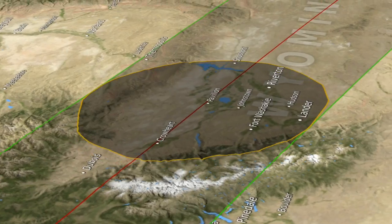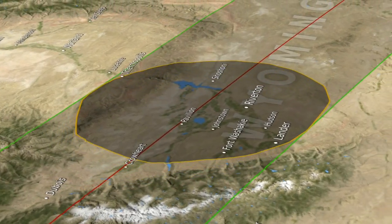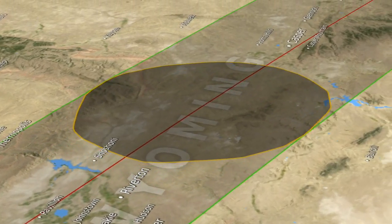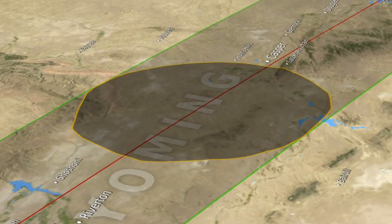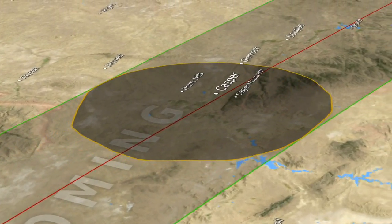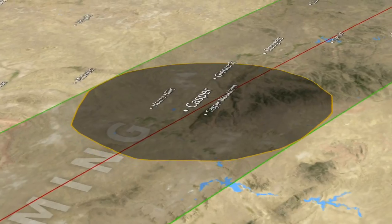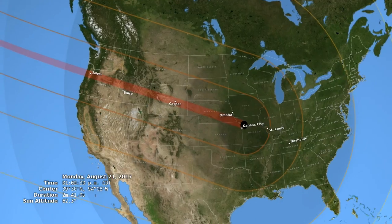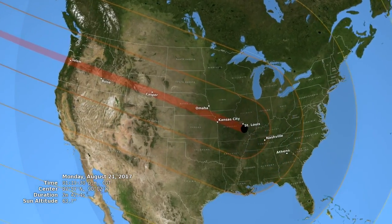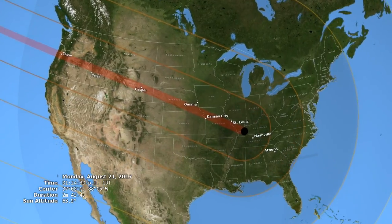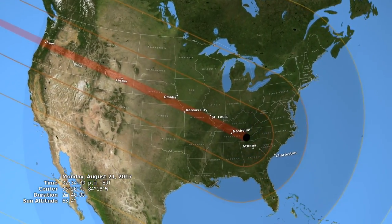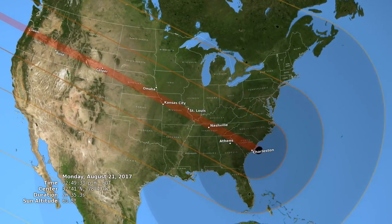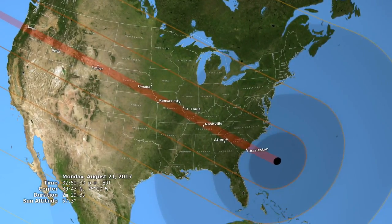We've known for a long time that the elevation of the observer affects where the shadow is. We've also known that the mountains and the valleys along the edge of the moon affect the shadow. On eclipse maps in the past, the image of the umbra — that shape of the shadow on the Earth — is drawn as a smooth oval, but we know that the moon isn't smooth.